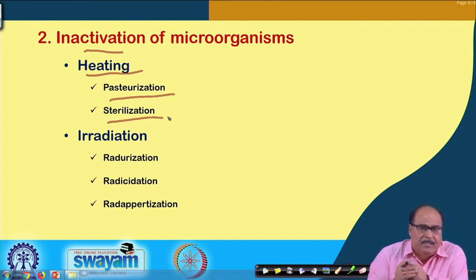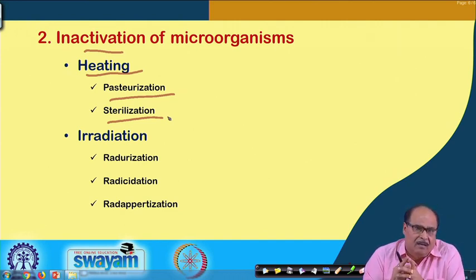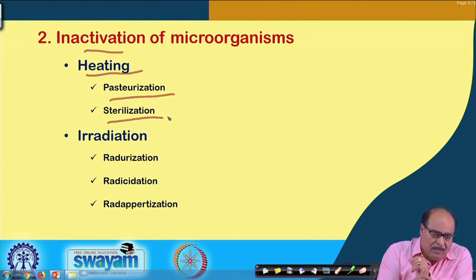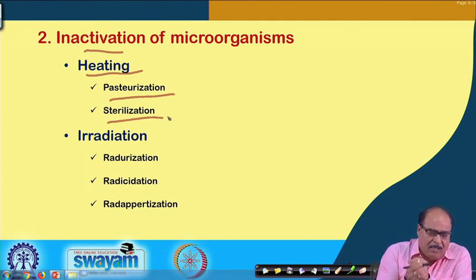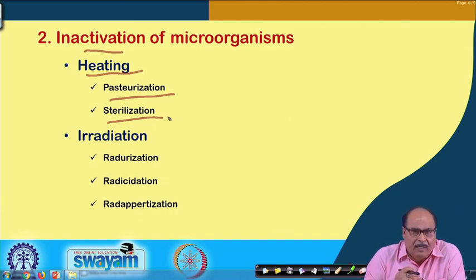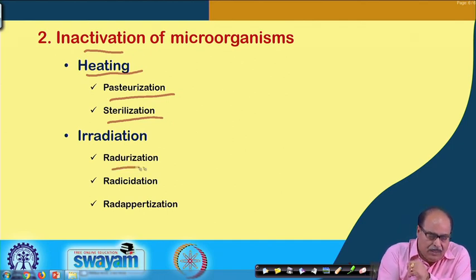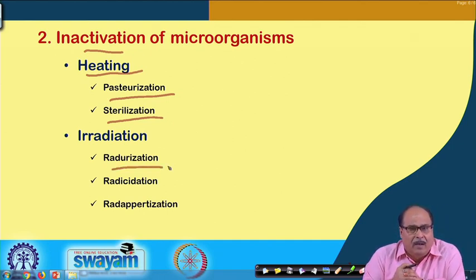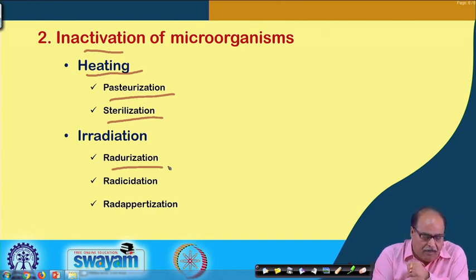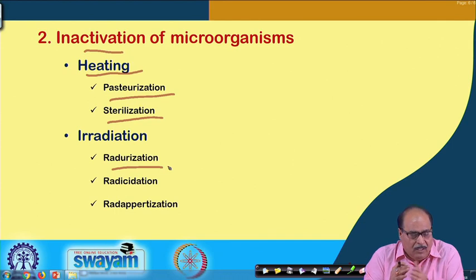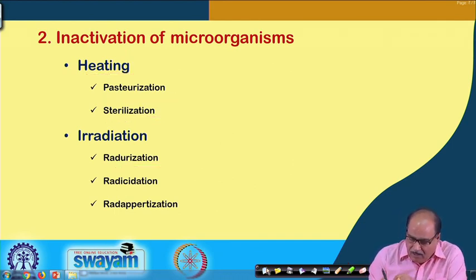In sterilization, all forms of microorganisms are removed. Another way of killing microorganisms is by providing radiation energy, and processes used for food irradiation include radicalization and radicidation. These aspects of food irradiation will be taken up separately in another lecture.